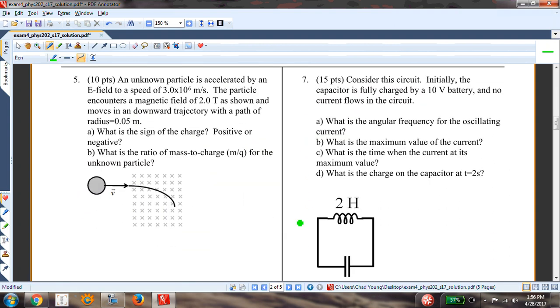All right. An unknown particle accelerates in an electric field to a speed of 3 million meters per second. That's V. The particle encounters a magnetic field of 2 tesla. That's B. And a radius of 0.05 meters. That's R.